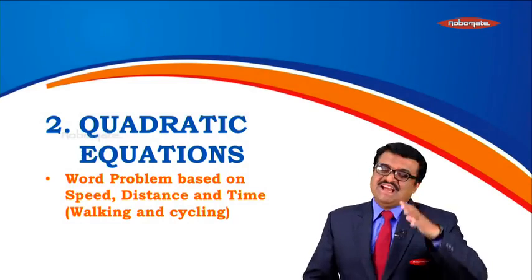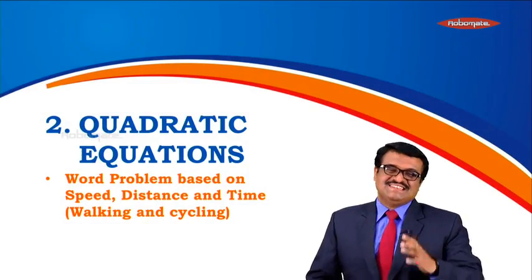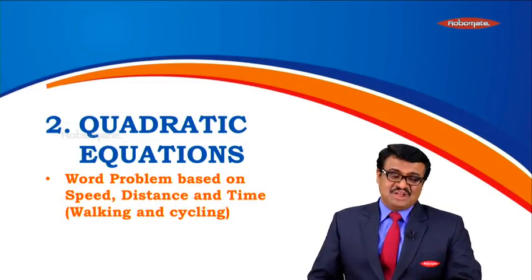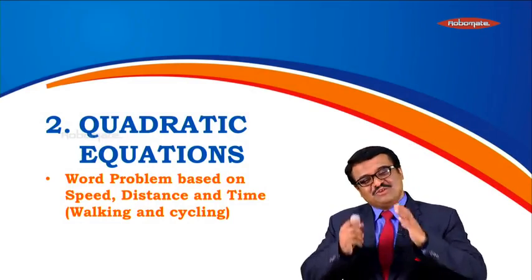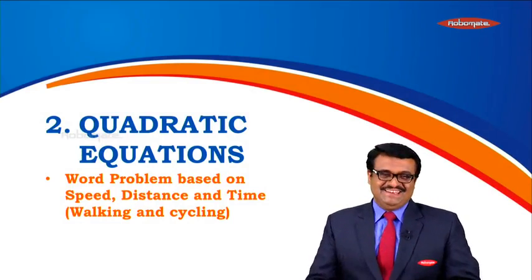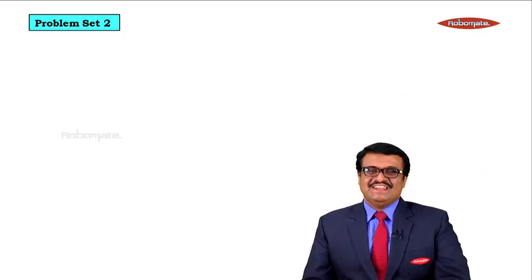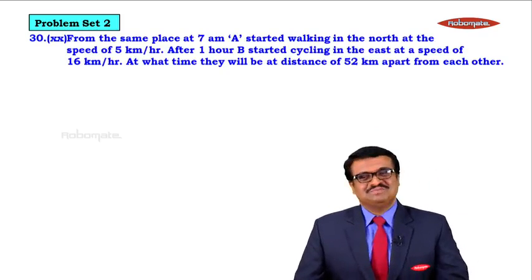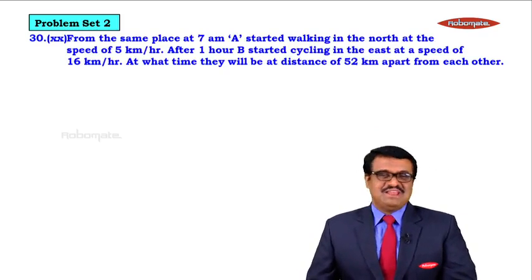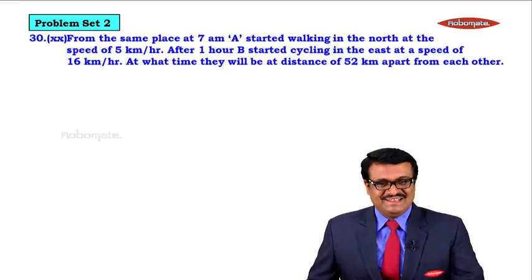In this module, we'll be seeing a word problem based on speed, distance and time — a very interesting sum based on walking and cycling. Let us take up the question: problem set 2, 30th main question, sub-question number 20.